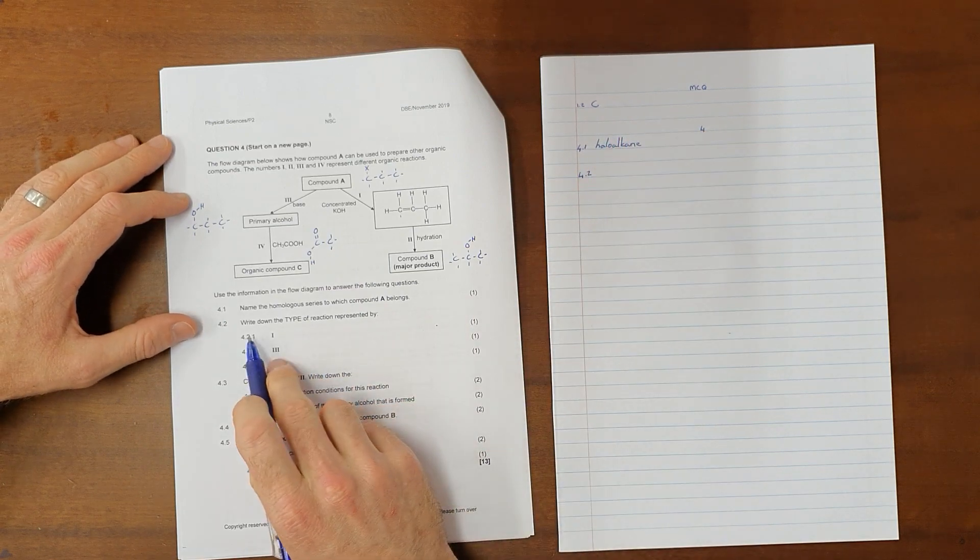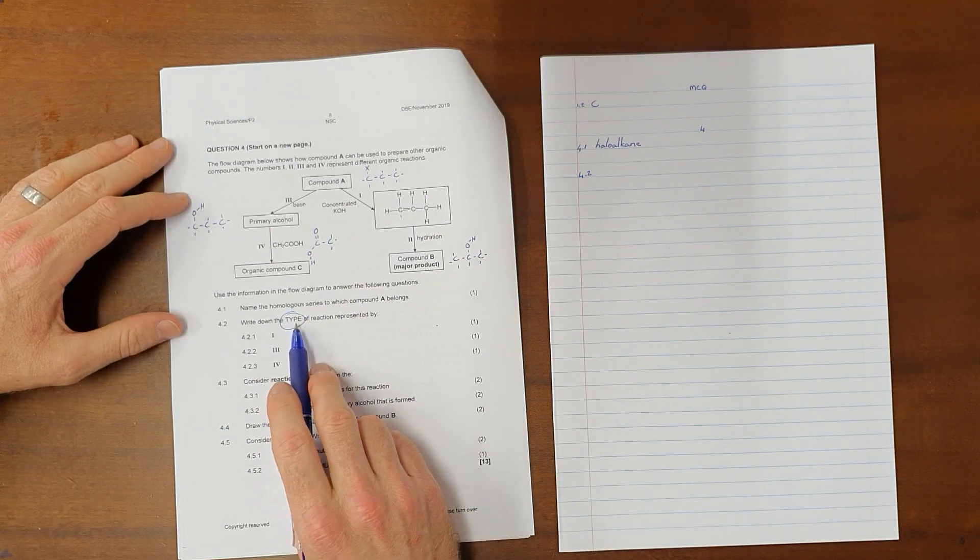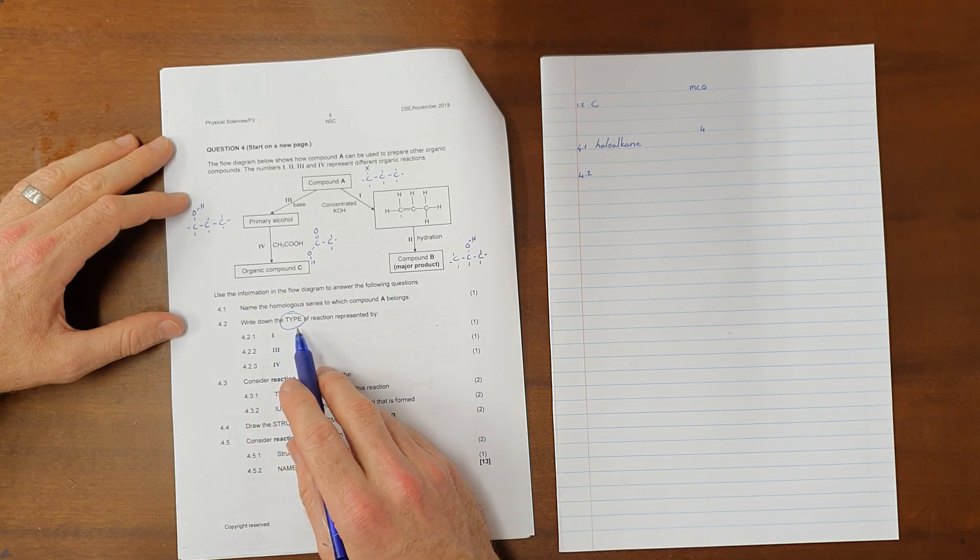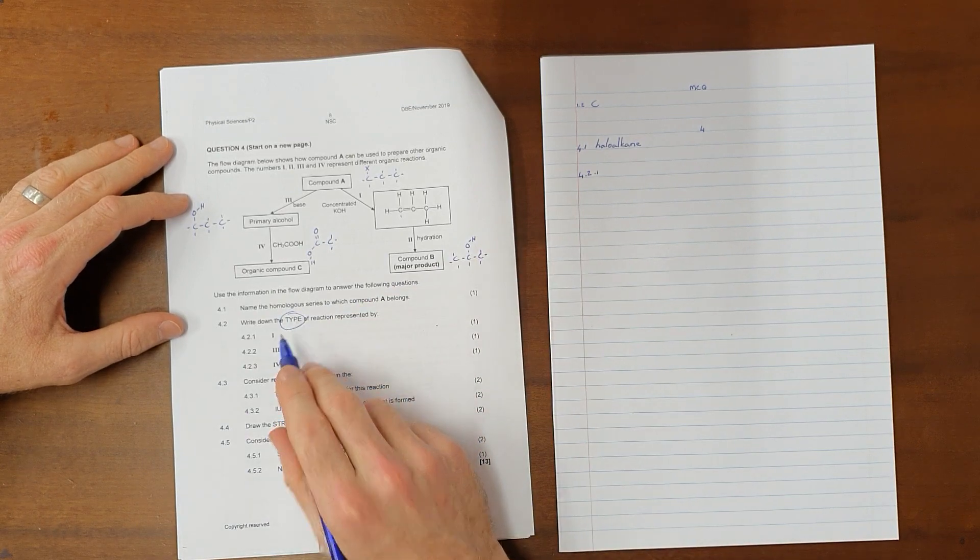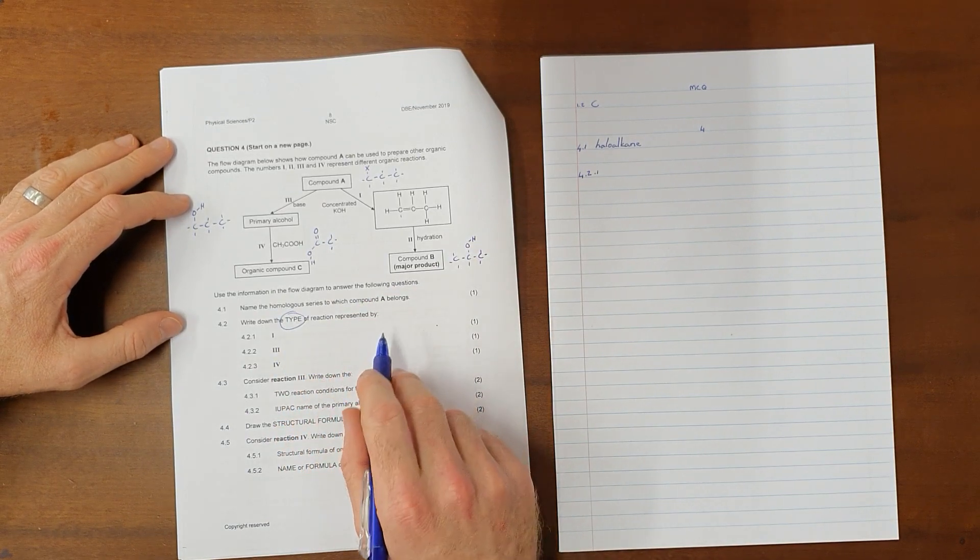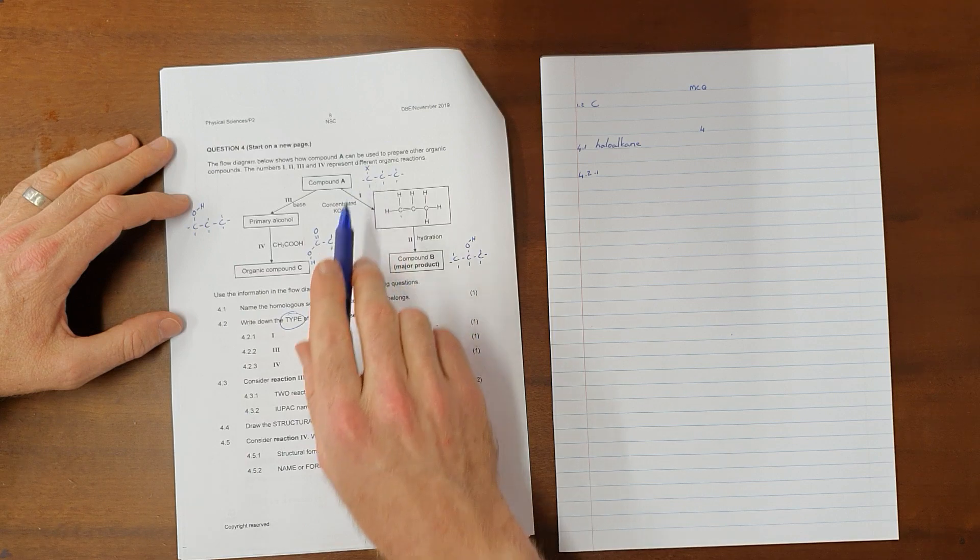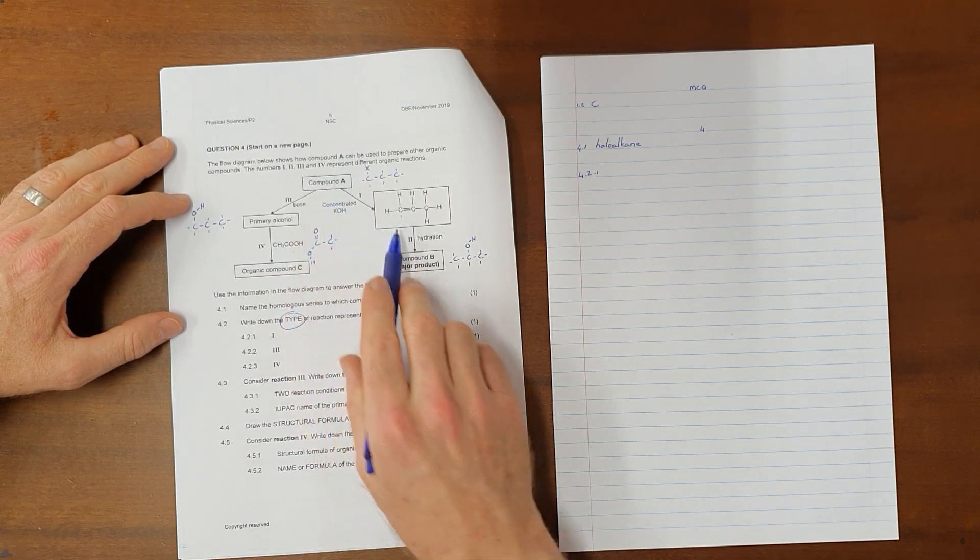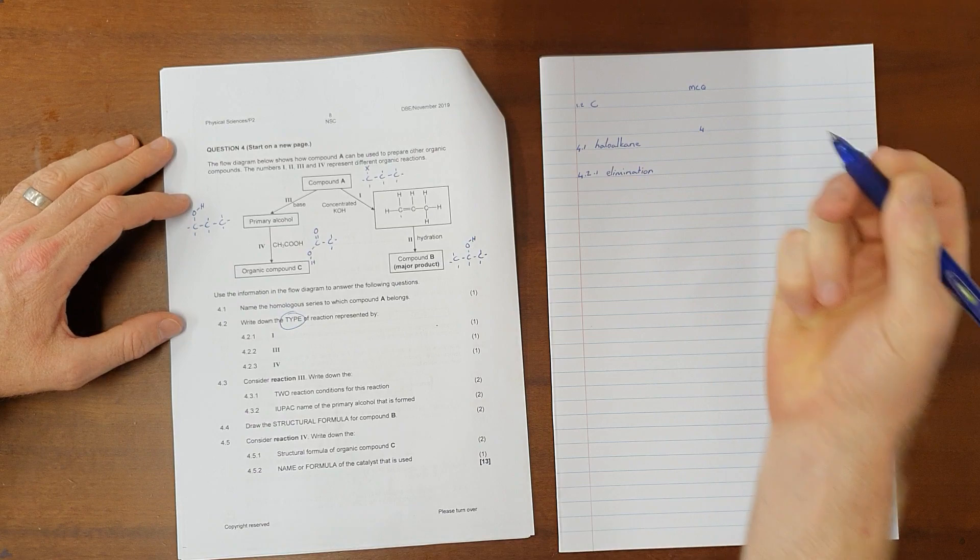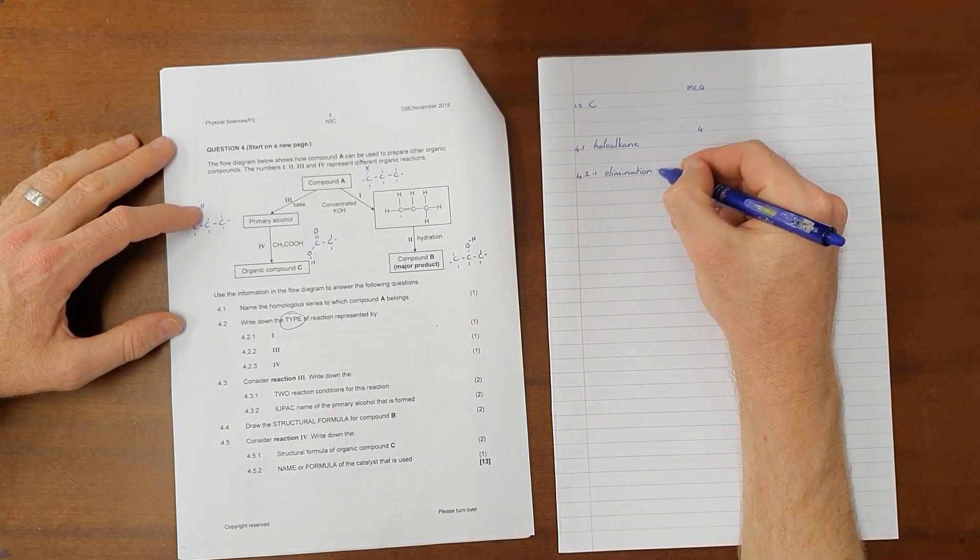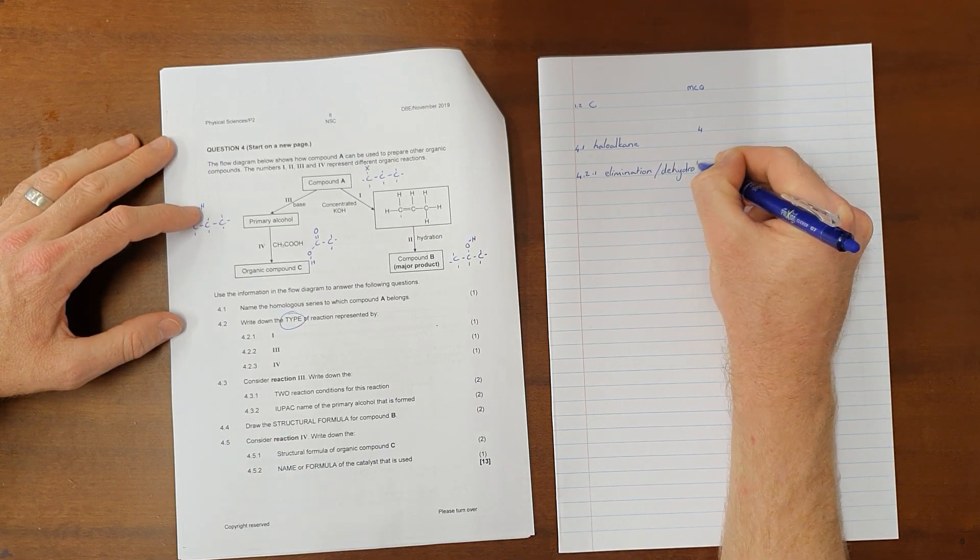Question 4.2, write down the type of reaction represented by the following. Important to note here that type would normally refer to addition, elimination or substitution reaction, although it can be unclear at times. And so what we advise is that you identify both the type and the specific name for each reaction. So as an example, at 4.2.1, we can see here, we go from a haloalkane to an alkene, which would mean that this is an elimination reaction. That, strictly speaking, is the type of this reaction. But because we cannot be sure what is being asked here, we would normally just add there that this is specifically a dehydrohalogenation reaction.